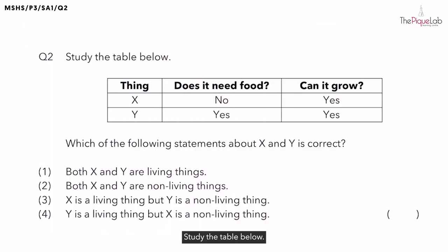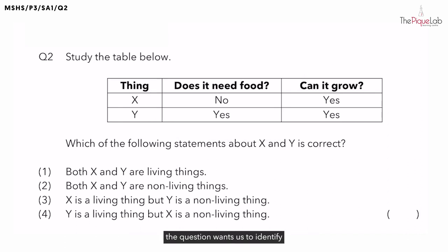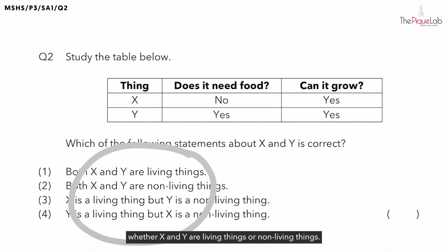Question 2, study the table below. In this table, we have two things, X and Y, and two different characteristics given in the table. Based on these two characteristics, the question wants us to identify whether X and Y are living things or non-living things.